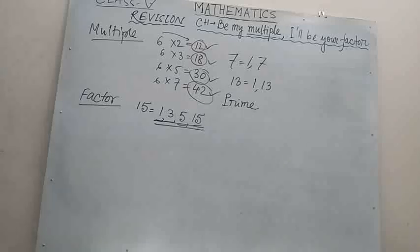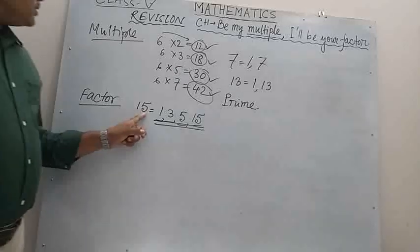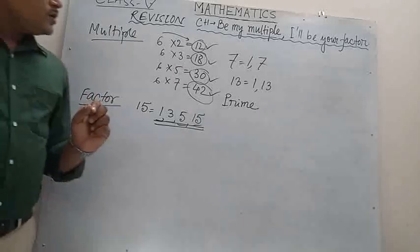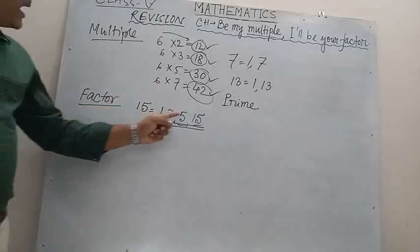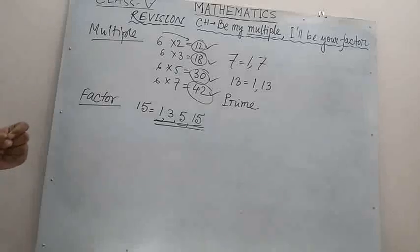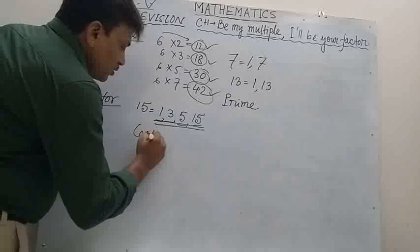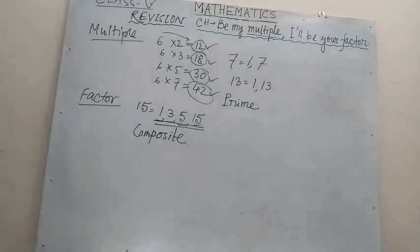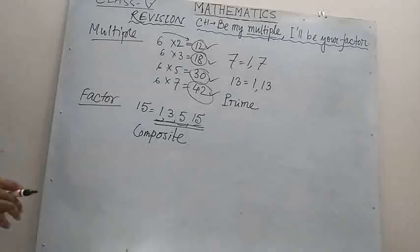These numbers are called prime numbers. And suppose a number like 15, which is divisible by 1, itself, and so many other numbers — this type of number is called a composite number.